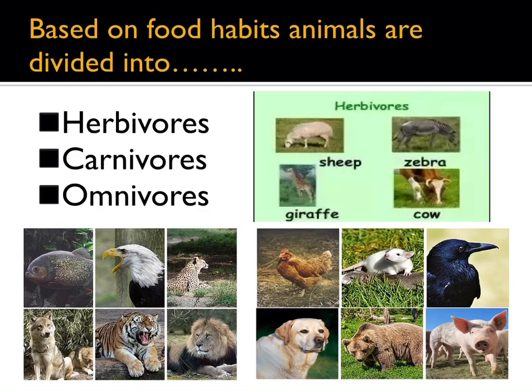Animals like tigers, foxes, and leopards eat the flesh of other animals. They only eat flesh and do not eat plants. So they are called flesh-eating animals or carnivores.